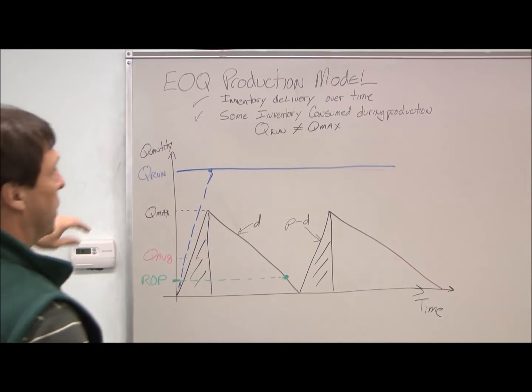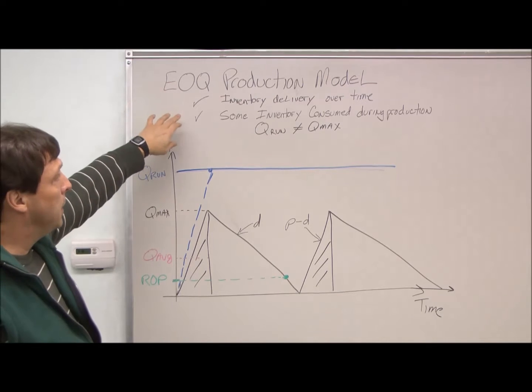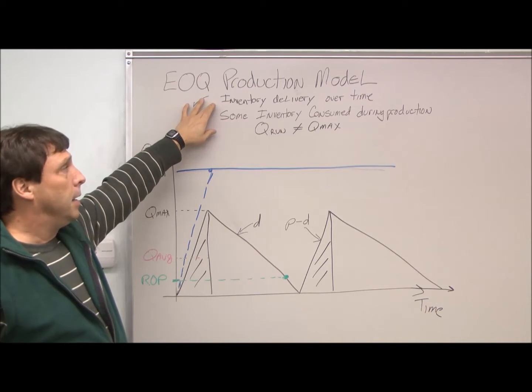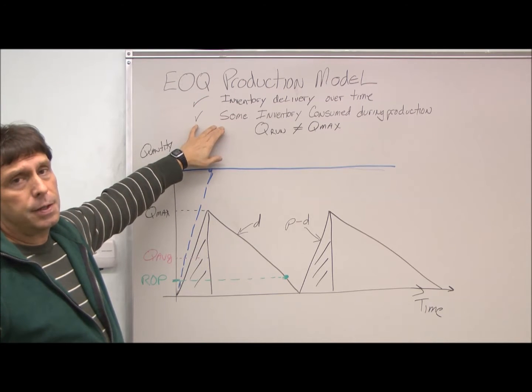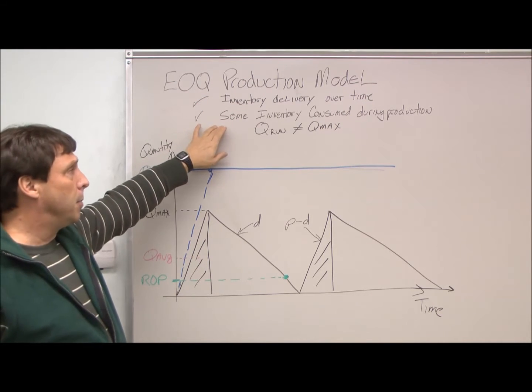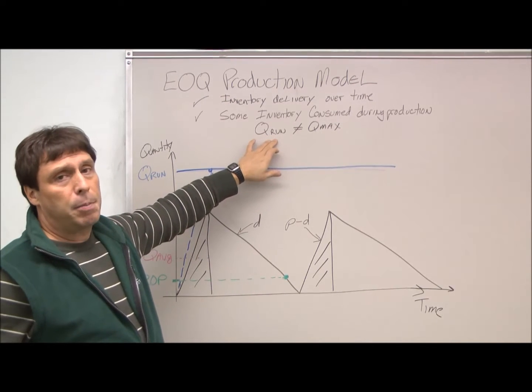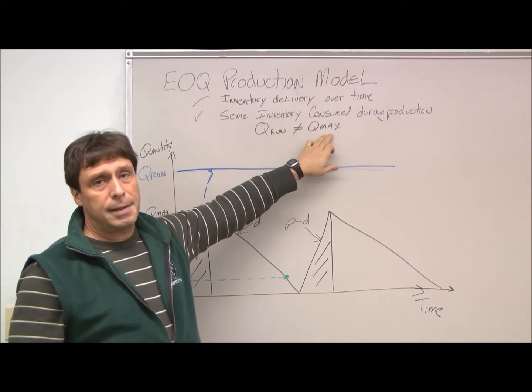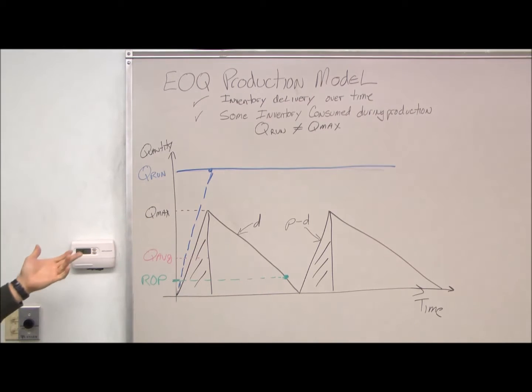Today we're going to look at the EOQ production model. The EOQ production differs because delivery is not instantaneous, it happens over time and some of the inventory is consumed during the production process, which means our production run, or Q-run, is not equal to our max inventory level, Q-max. This is depicted by this diagram here.